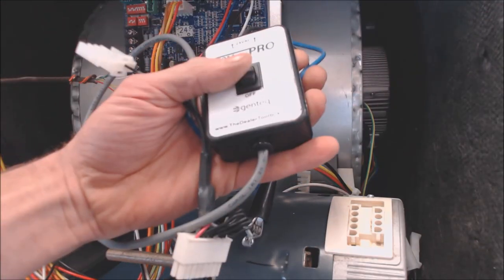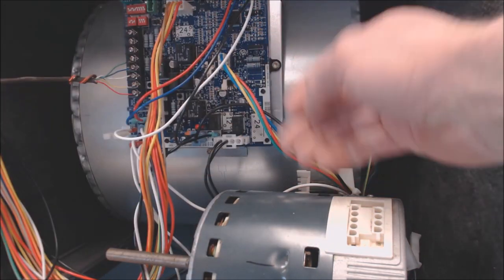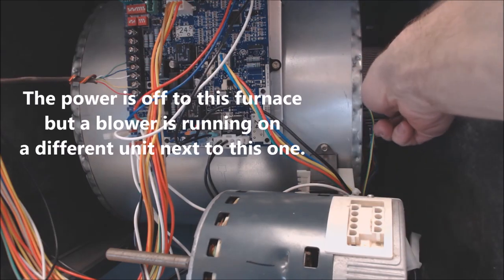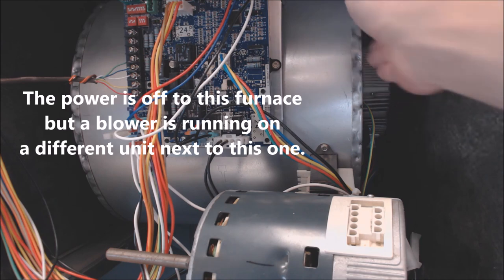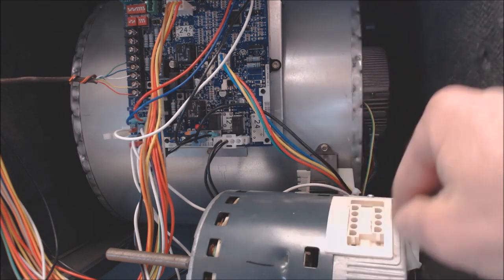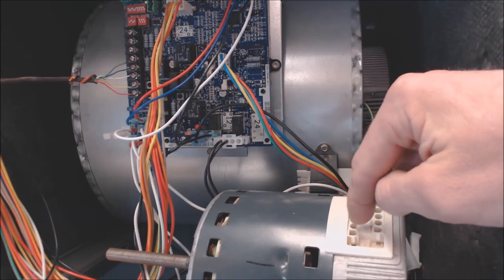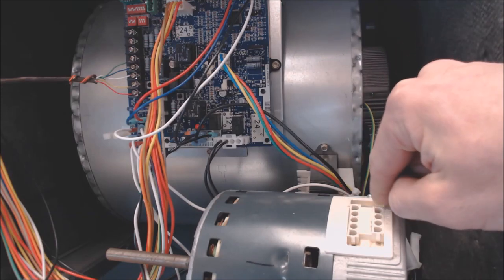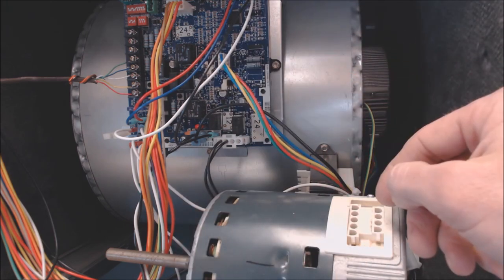The TechMate Pro makes it very easy to determine if the variable speed blower motor will work or not. In this case, the blower motor is in the squirrel cage right back here. And this is what the terminals look like. You have your high voltage that's powered all the time, and then you have your signal wires for telling the blower motor to turn on whatever speed it needs to turn on.